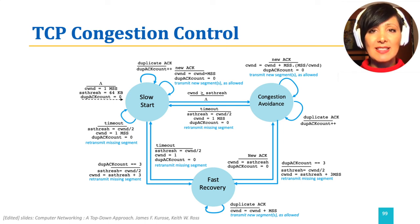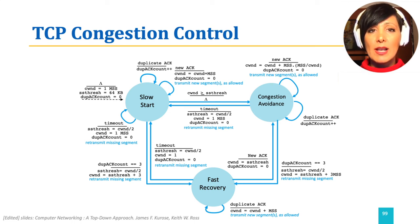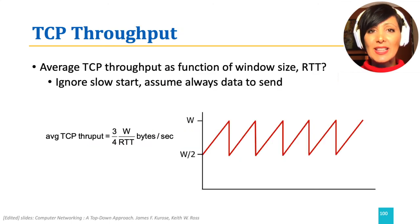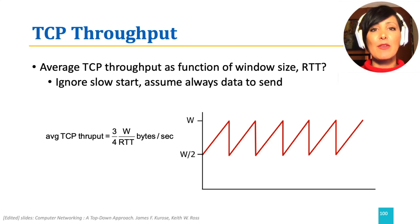A timeout event in any of the states will cause CWND to equal 1, SS threshold being set to half of the CWND value, and going back to slow start. Knowing the mechanisms implemented by TCP in more detail, let's now re-examine TCP throughput.